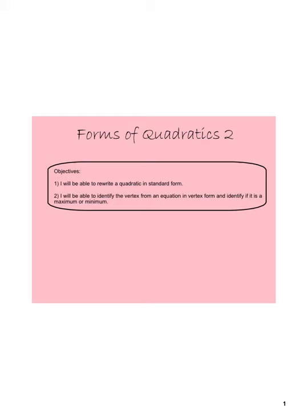Hello again, higher algebra students. Here with lesson three of unit seven, forms of a quadratic two. A couple objectives here: to be able to rewrite a quadratic in standard form — we will recap what standard form is — and to be able to identify the vertex from an equation in vertex form and identify if it is a maximum or a minimum.